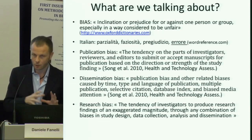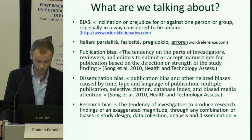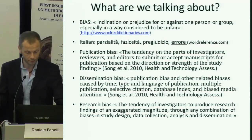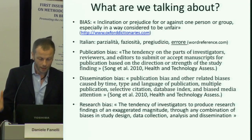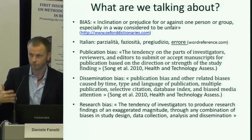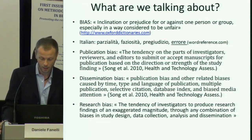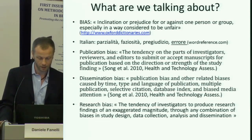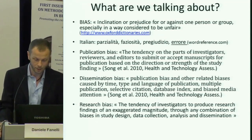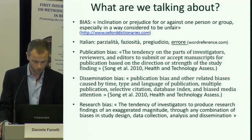The study in question does look at all these biases, and to some extent we will too. I would prefer to consider a concept that's even wider than that. I am essentially thinking of bias in general in research as a combination of these kinds of biases as well as any other form of bias that might enter the research process. A tentative definition would be: the tendency of investigators to produce research findings of an exaggerated magnitude through any combination of biases in study design, data collection, analysis, and dissemination.